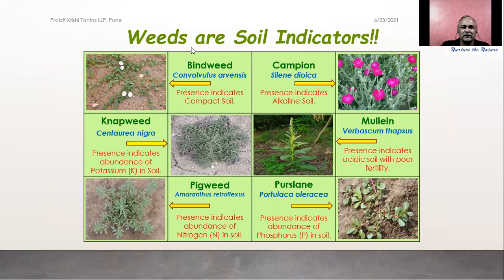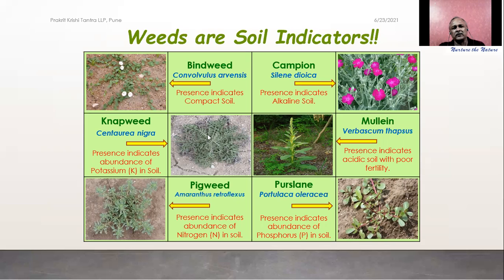Here, looking at weeds as soil indicators, I have taken a few examples. Bindweed grows like a creeper, and wherever it is present it indicates the soil is very compact — meaning low aeration and high clay content. Knapweed is another weed that grows more horizontally, spreading on the soil. Its presence indicates high potassium — an abundance of potassium in the soil.